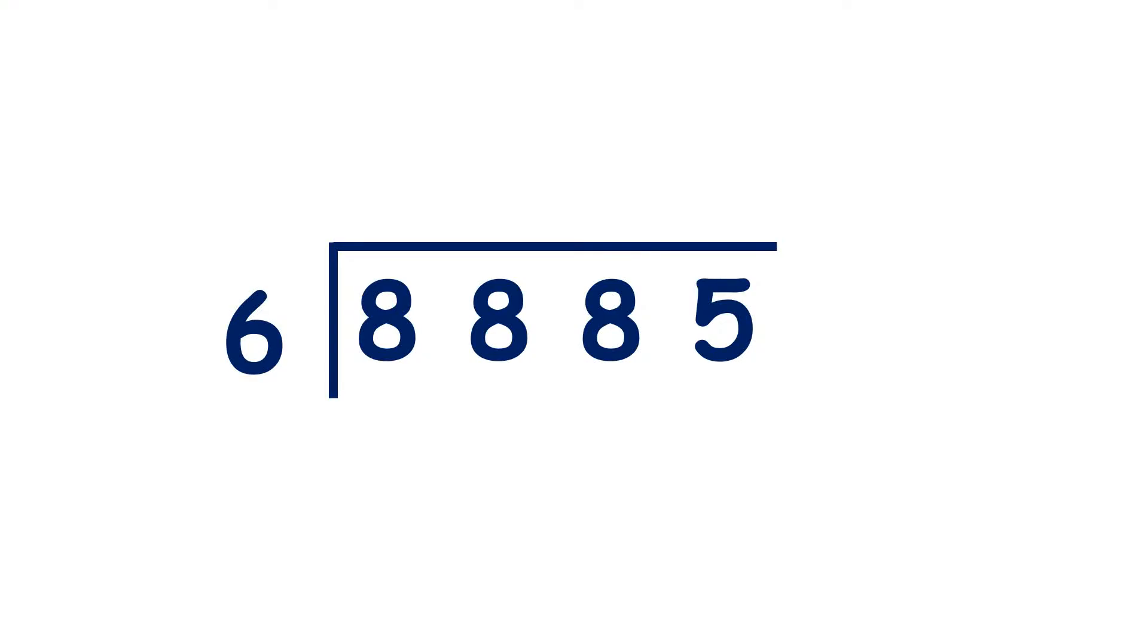Let's solve 8,885 divided by 6 using short division. 8 divided by 6 is 1, remainder 2.